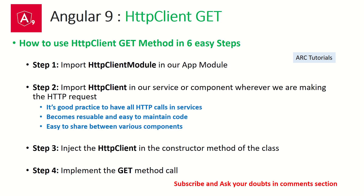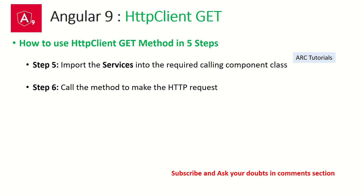There are six steps to follow. Step one: import HttpClientModule in your app module — without this it will not work. Step two: import HTTP client in the component where you're using it. Step three: inject it into the constructor to get an instance. Step four: make a GET call. Step five: import the service into the required component. Step six: make the call directly to the HTTP request.